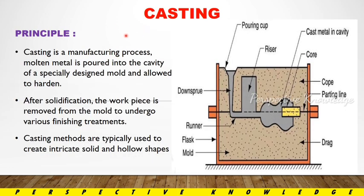So, casting is a manufacturing process where molten metal is poured into the cavity of a specially designed mold and allowed to harden. So, casting is a manufacturing process.